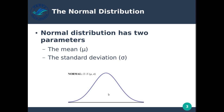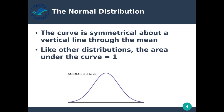Remember that everything underneath the curve equals a probability of 1 — if we add all the probabilities of landing anywhere within this curve, they add up to 1. The standard deviation lets us say how far away from the mean some measurement is. We can then ask questions like: what is the likelihood of some value landing at a certain distance from the mean? The curve is symmetrical about a vertical line through the mean.